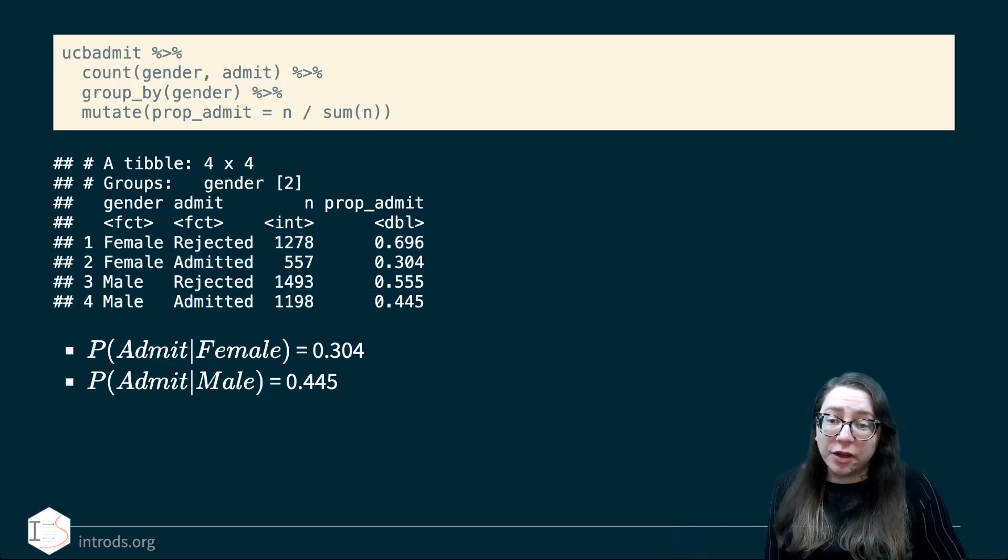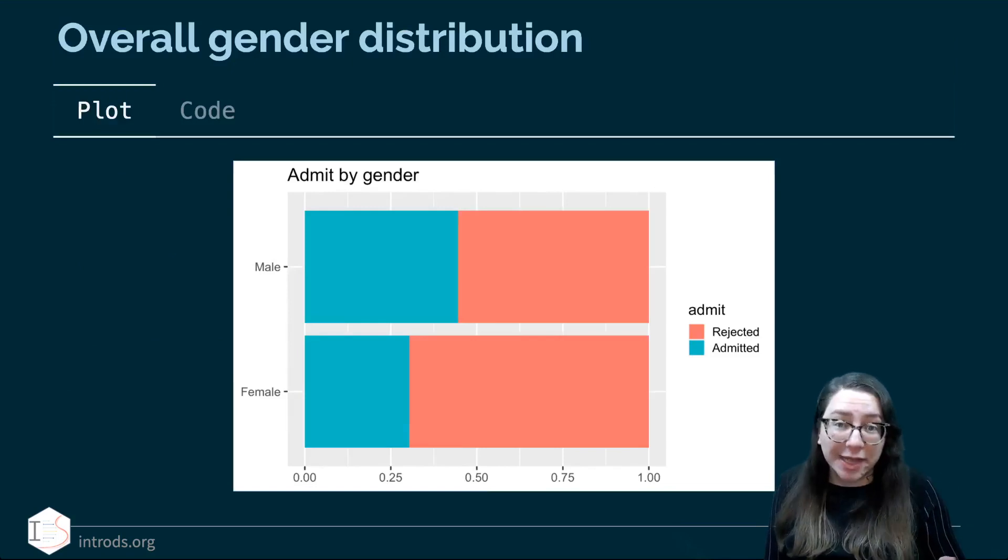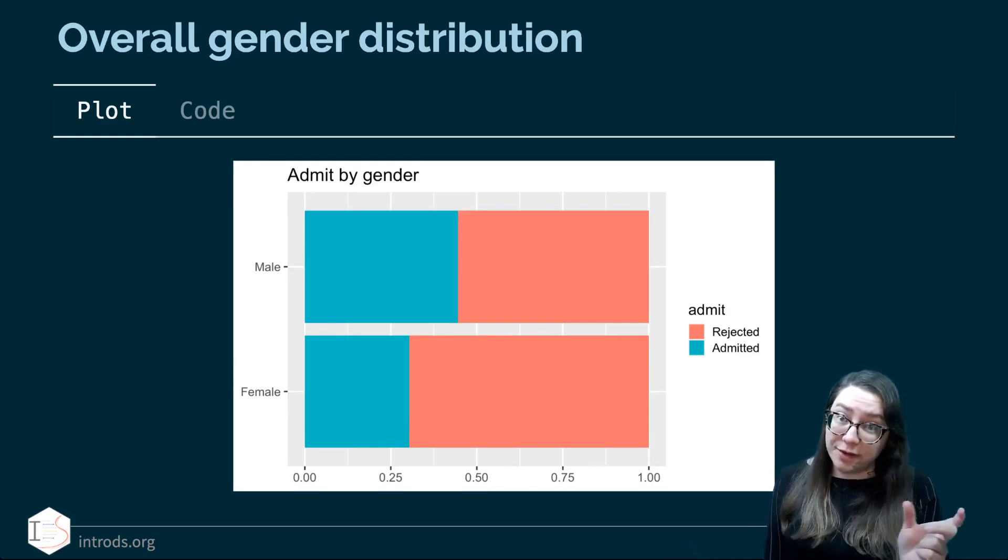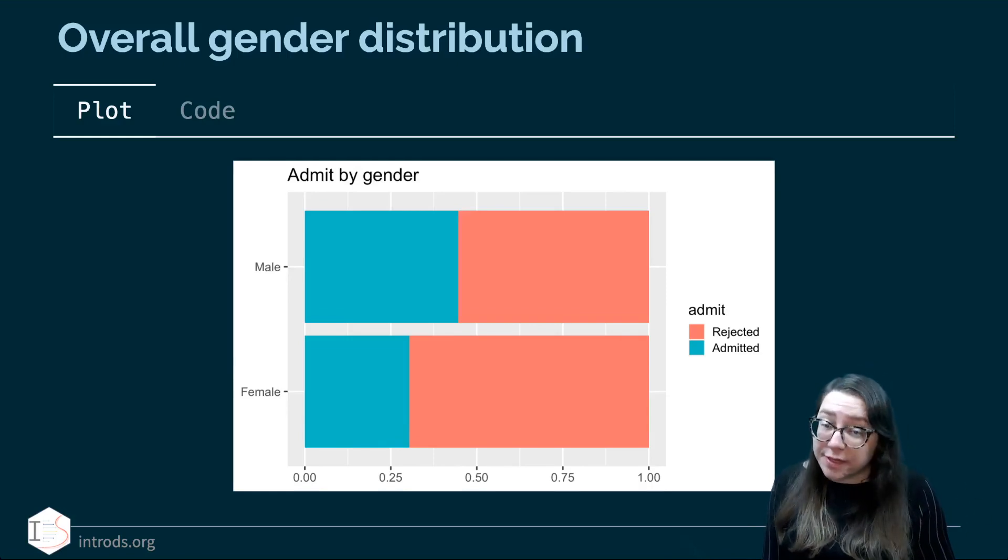We can see here that about 30.4% of the females and 44.5% of the males were admitted. So the answer to the question is, is the admission rate higher for males than females? Yeah, absolutely. That's what the numbers show. And here is that same information visualized in a segmented bar chart where we can see that the green that indicates the admitted makes up a smaller portion of the bar graph for females than for males.